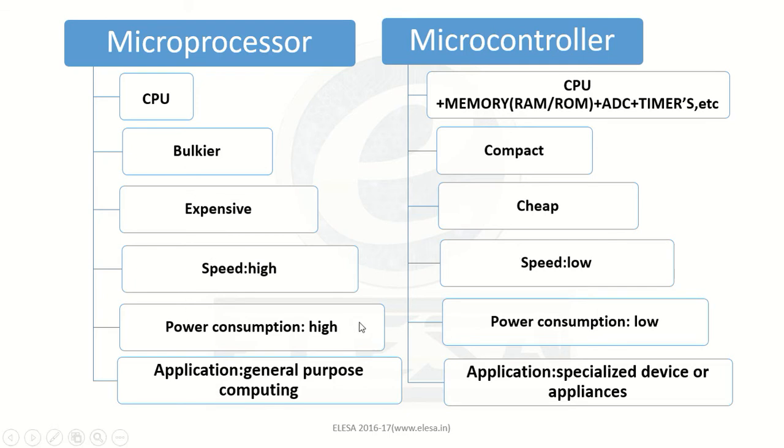The power consumption of a microprocessor is high, whereas the power consumption of a microcontroller is low. Where do we use a microprocessor and what is the application of a microcontroller? Places where we need general purpose computing, like computers, use a microprocessor. In devices that perform specific tasks, for example in a washing machine where the task is to wash clothes, we use a microcontroller in such specialized devices or appliances.